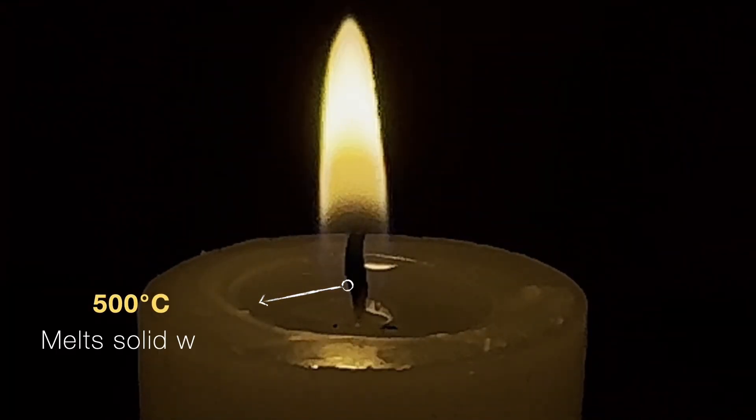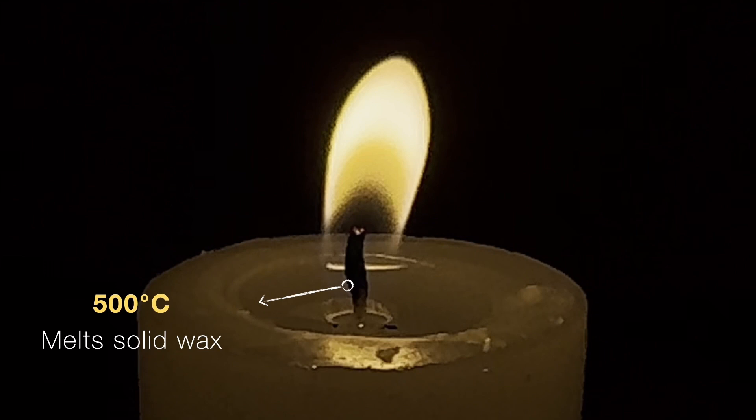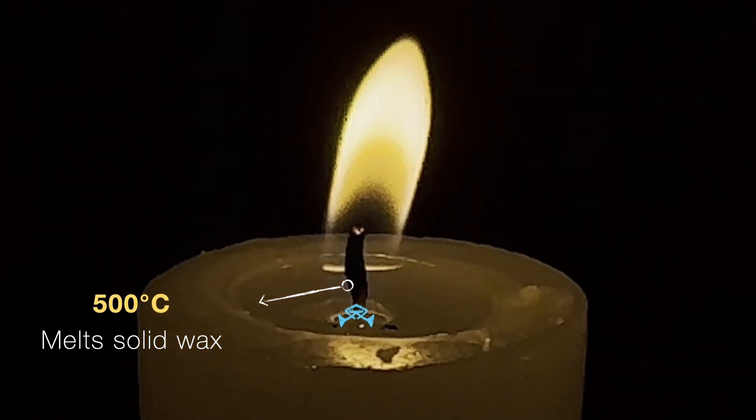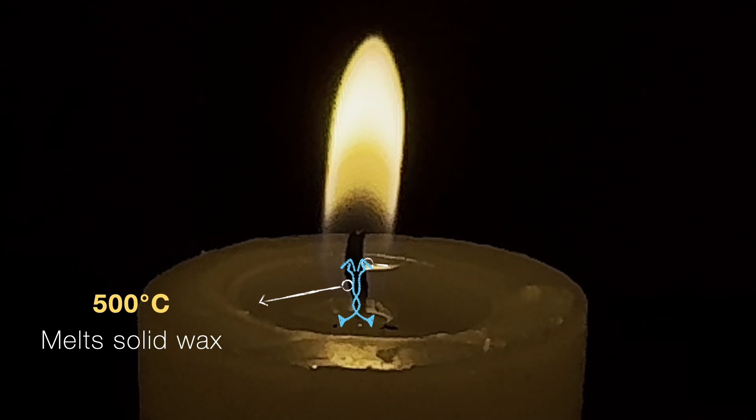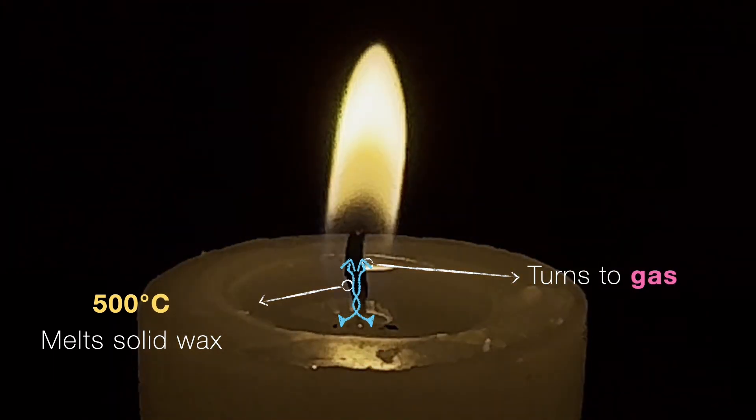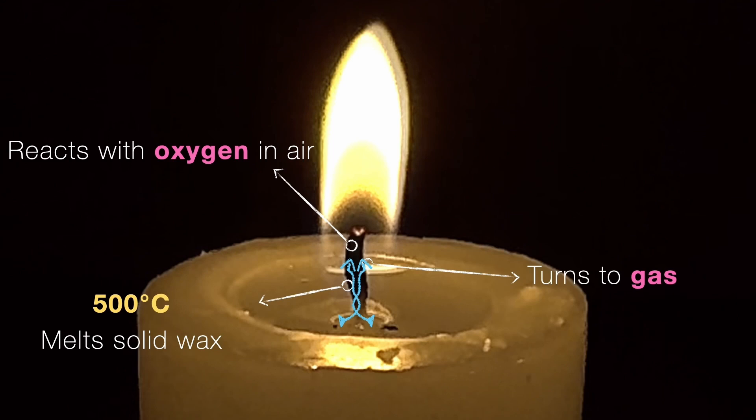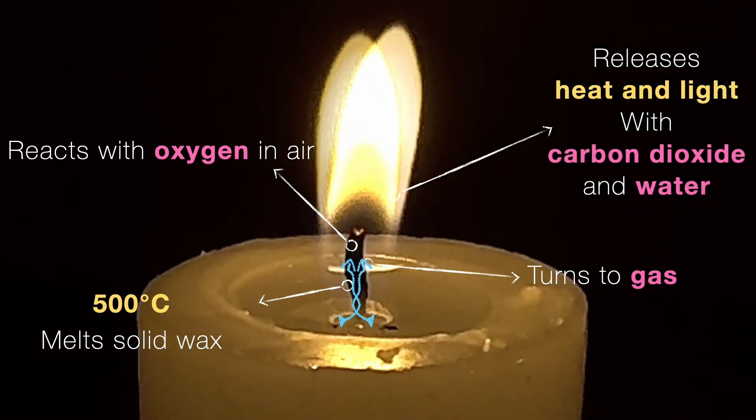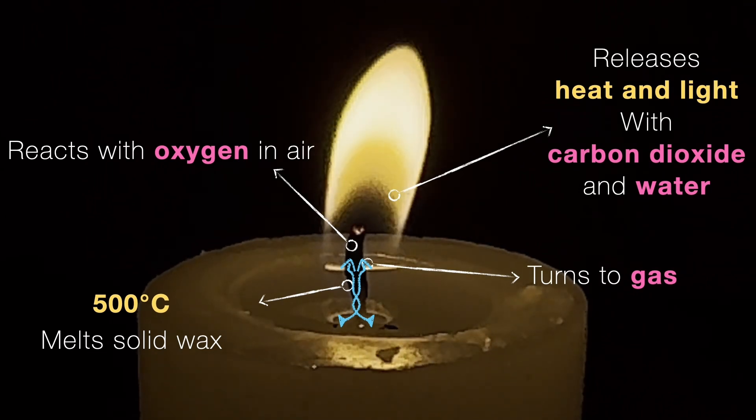So what do we do? We light the wick and watch closely. The flame at the base gets super hot, over 500 degrees Celsius, and that's hot enough to melt the solid wax. Now the wick soaks up the liquid wax like a sponge. As the wax travels up, it gets hotter and turns into a gas.